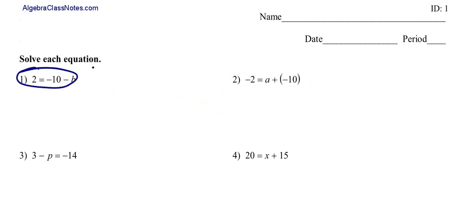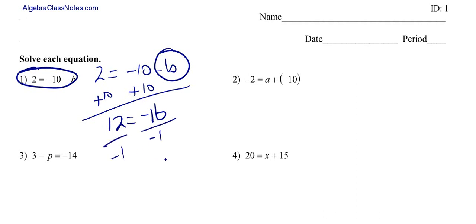Let's look at number 1 here. 2 is equal to negative 10 minus b. You've got to get this b by itself, right? So I'm going to add 10 to both sides. So now I've got 12 is equal to negative b. And this is really the same thing as negative 1 times b. We're going to divide both sides by negative 1, and b is equal to negative 12.